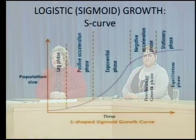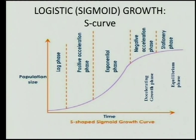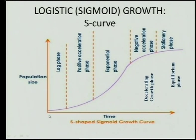The next type of graph is the logistic, or the sigmoid growth, and that's called the S-curve. Now both the J and the S are named because of their shape. This is the type of graph for bigger animals with slower growth in population size, with fewer numbers but more stable populations.